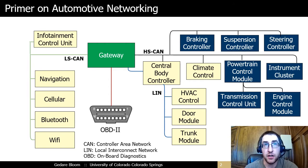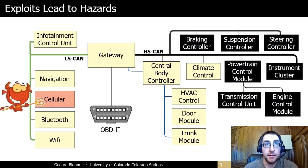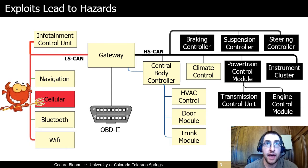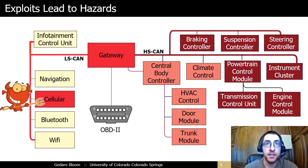Other network protocols also exist, such as MOST and Ethernet, that can carry high-throughput data such as camera feeds, but we will limit our discussion to CAN. Typical remote vehicle exploits begin with an adversary establishing a foothold, usually by compromising a telematics or infotainment device on a non-safety-critical network. The adversary then moves laterally by compromising the gateway, which gives access to other network buses, allowing arbitrary attacks targeting any electronic control unit in the system.